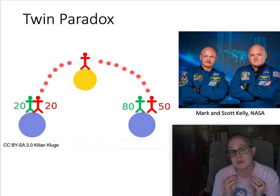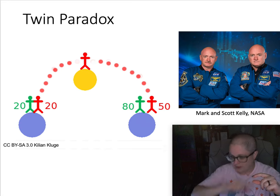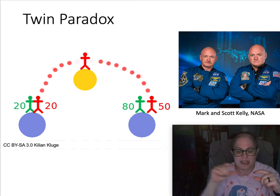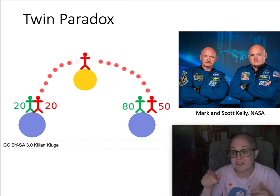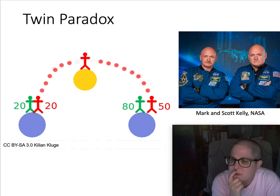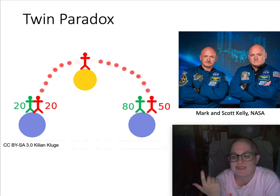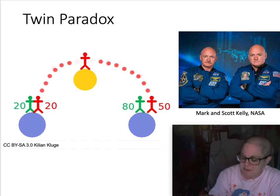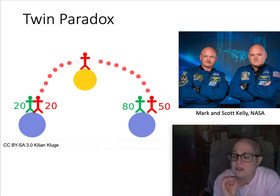We can't travel 30 light years yet, but they've done similar experiments with atomic clocks — clocks with really fine precision. The clocks are lined up at the start, one goes off on a fast journey and comes back, and one clock is ahead of the other. In fact, one of the Kelly twins spent about a year on the space station, so technically one is some number of nanoseconds older. The point is: this is weird, physically possible, and has actually been measured.